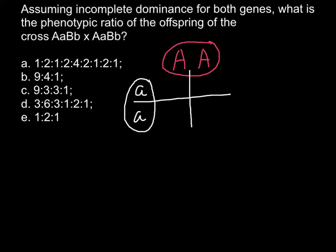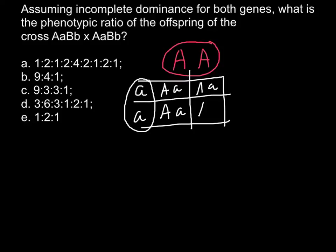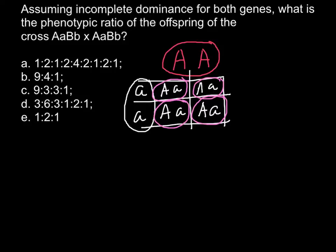When we cross these two parents, all the offspring are going to be capital A, small a — all heterozygous and all the same color. But the color would be different from the parents — it's going to be an intermediate color, for example pink. So capital A would be incompletely dominant over small a, and the offspring will be some intermediate color between red and white. This is what incomplete dominance means.